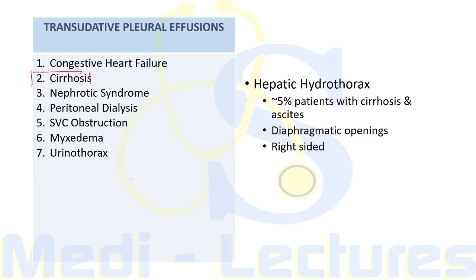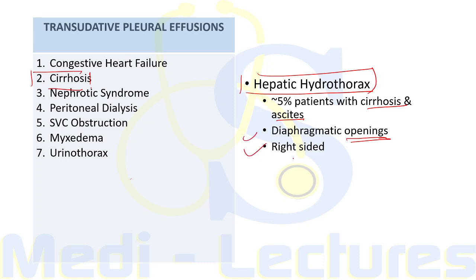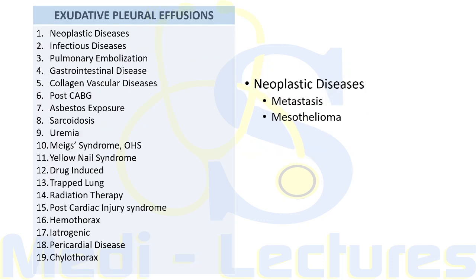Cirrhosis causing pleural effusion is also known as hepatic hydrothorax. It develops in about 5% of patients with cirrhosis and ascites and is due to direct movement of peritoneal fluid through diaphragmatic openings. The effusion is usually right-sided and is frequently large enough to produce severe dyspnea.